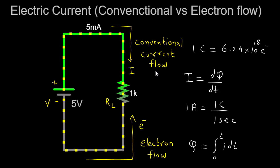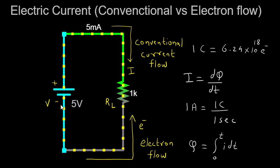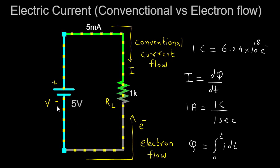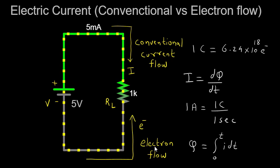However, through further scientific investigation, it was discovered that in most conductors, electric current is actually carried by negatively charged particles called electrons. These electrons flow from the negative terminal of the power source to the positive terminal. This means that the real direction of electron flow is opposite to that of conventional current.